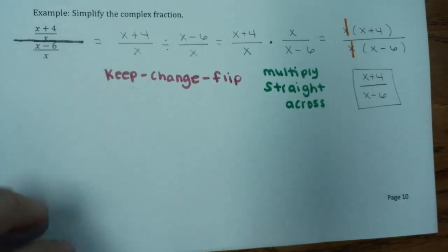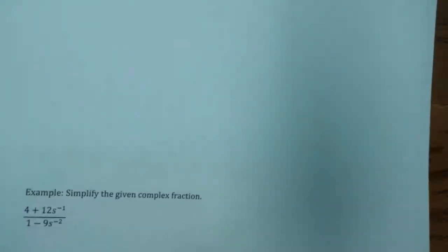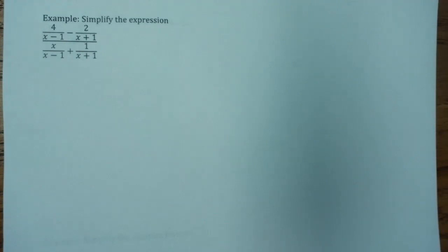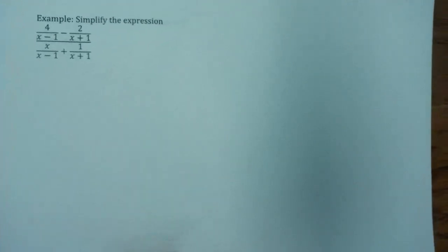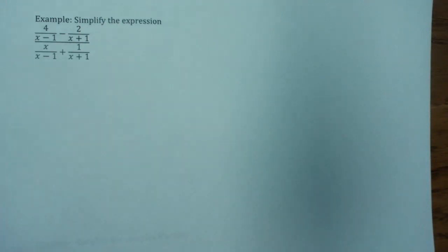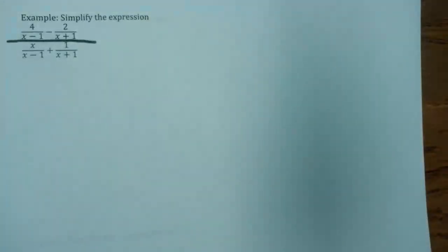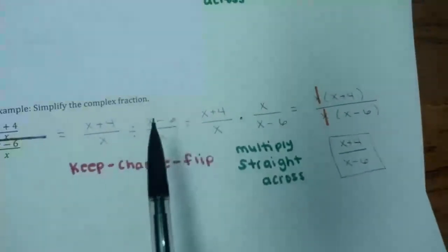Each time we get a little more complex, so let's go to the next page. These look scary, so don't be scared off. Simplify the expression: 4 over x minus 1, minus 2 over x plus 1, all over x over x minus 1, plus 1 over x plus 1. This one is different because the previous one had one fraction divided by one fraction. Here I have two fractions being subtracted on top and two fractions being added on the bottom.